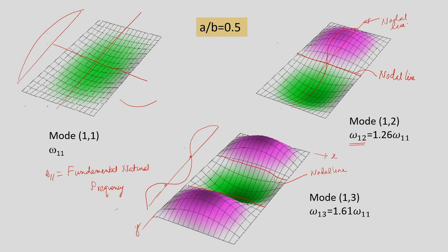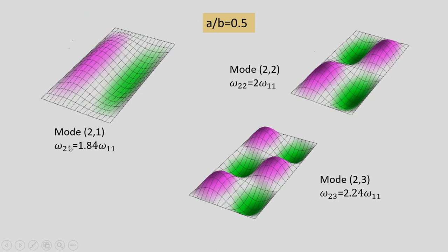For higher modes: mode (2,1) has ω₂₁ = 1.84·ω₁₁, with one nodal line along the y axis — one portion elevated and one depressed. Mode (2,2) has nodal lines in both x and y directions, with ω₂₂ = 2·ω₁₁.